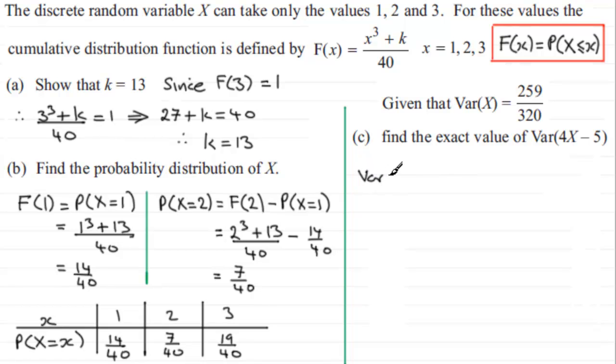That the variance of a constant times a random variable X plus or minus another constant, which I'll call b, is always equal to a squared times the variance of the random variable X. As for the constant b, that just goes out as 0. So you should be familiar with this idea for questions like this.